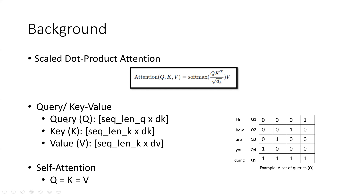The dimensions of query, key, and value are as follows. Here you can see an example of a Q matrix for a single sentence that has five words. Again, this is a very simple example, but in practice this matrix is not as small as what's shown here.